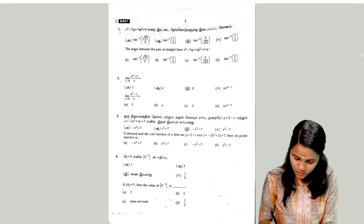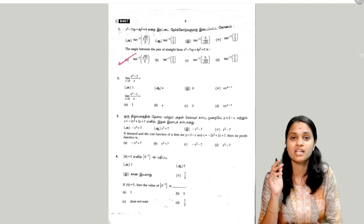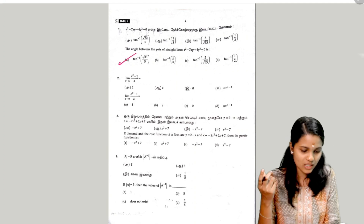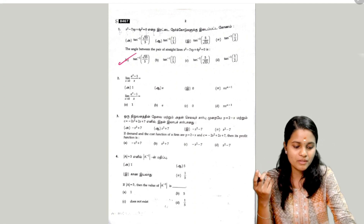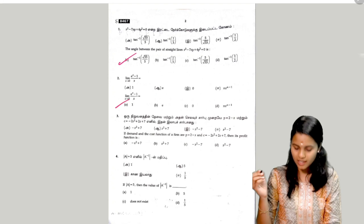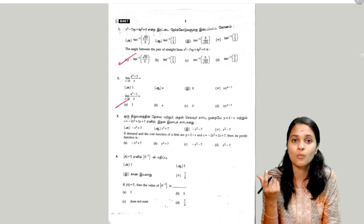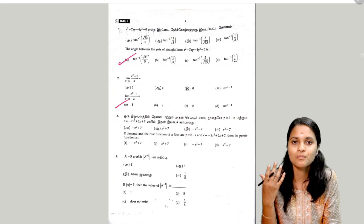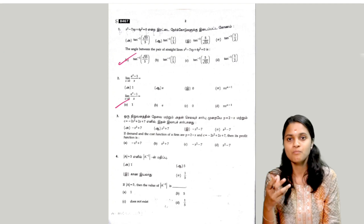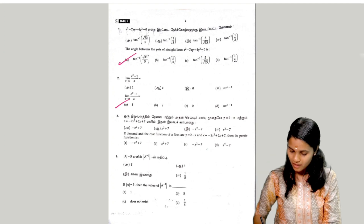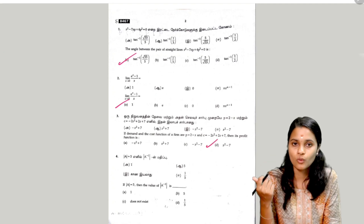So the first question answer is done. The next question is limit — the limit function — so this answer is 1. The next question is the third question: demand and cost function. So this answer is dx² minus 7.